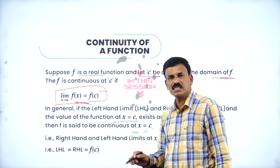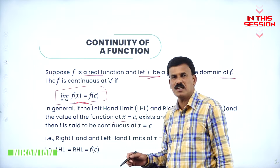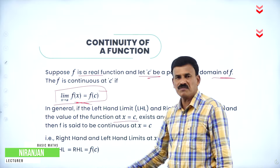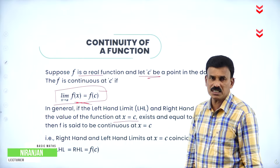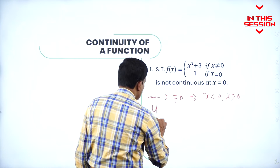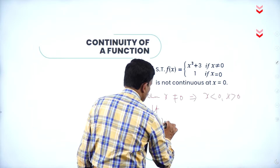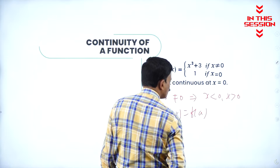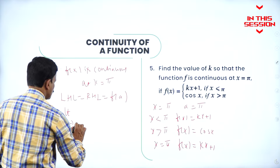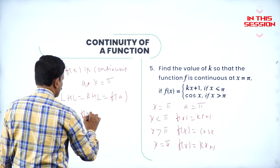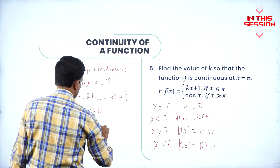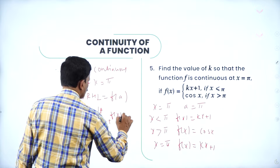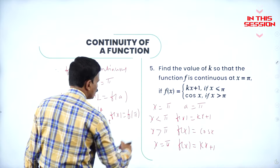The left hand limit as well as right hand limits are the same, and if they are equal to the functional value f(c), then the function is said to be continuous at x = c. That is: limit as x→φ⁻ of f(x) = limit as x→φ⁺ of f(x) = f(φ).